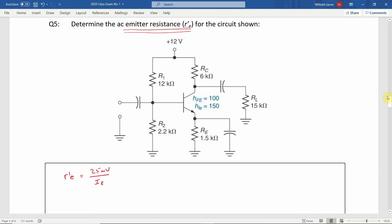It is written as R'E equal to 25mV divided by IE, where R'E is the AC emitter resistance and IE is the DC emitter current, found by Ohm's law, dividing the emitter voltage VE by the emitter resistance RE. So in order to answer this question, we will need to find the value of the emitter current IE.